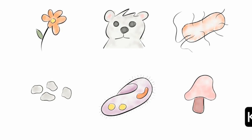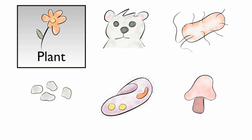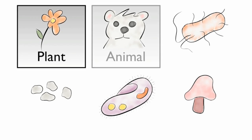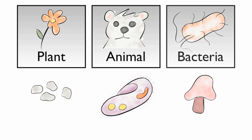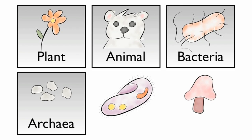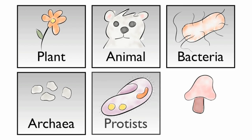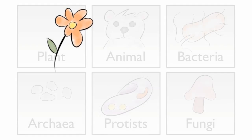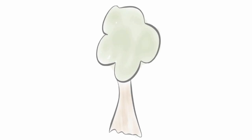The six kingdoms are plant, animal, bacteria, archaea, protists, and fungi.